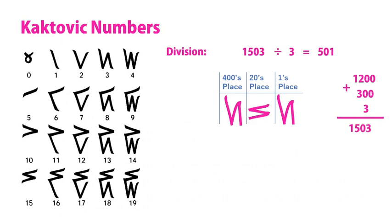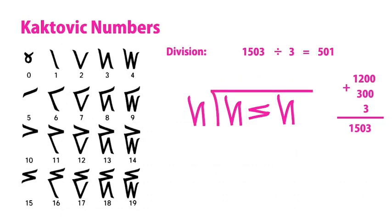We're going to take all of this and divide it by 3. With Kaktovic numbers, you don't actually have to know what these represent—you just look for how many times your divisor appears in the dividend. We can see it once here in the 400s place, so we'll mark down a 1 in the quotient. Next, we can see it fits in the 20s place—however, it's rotated, so we'll mark a 1 in the quotient again and rotate it to match. Then we can see that it appears once more in the ones place, giving us a total of 501.